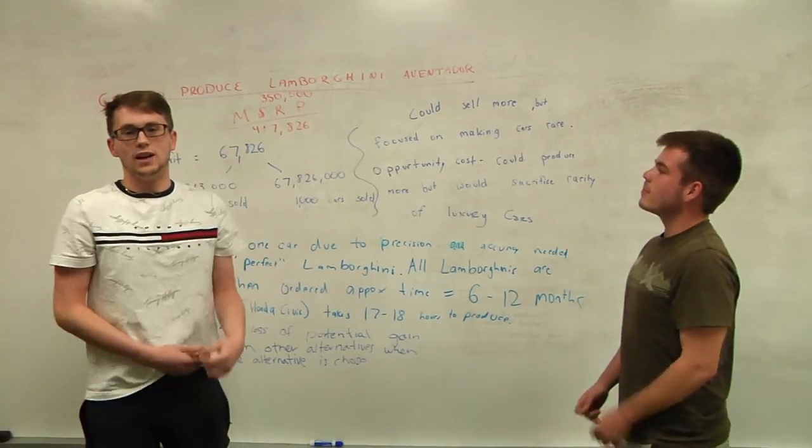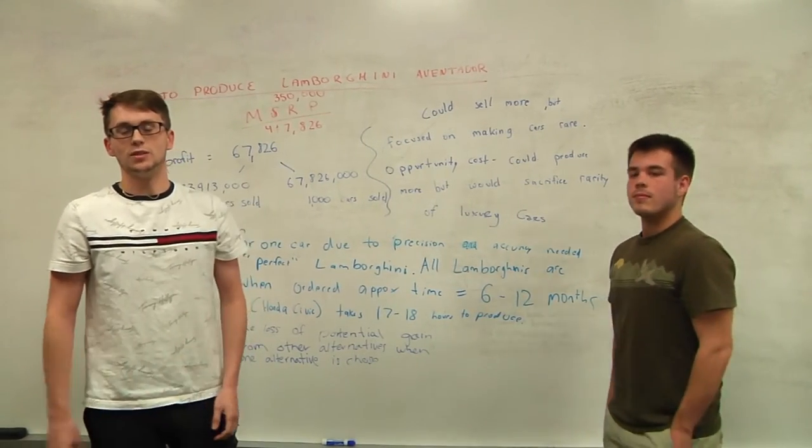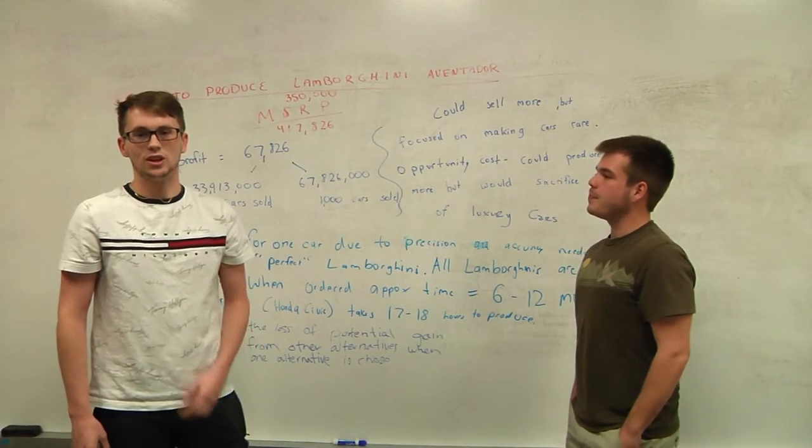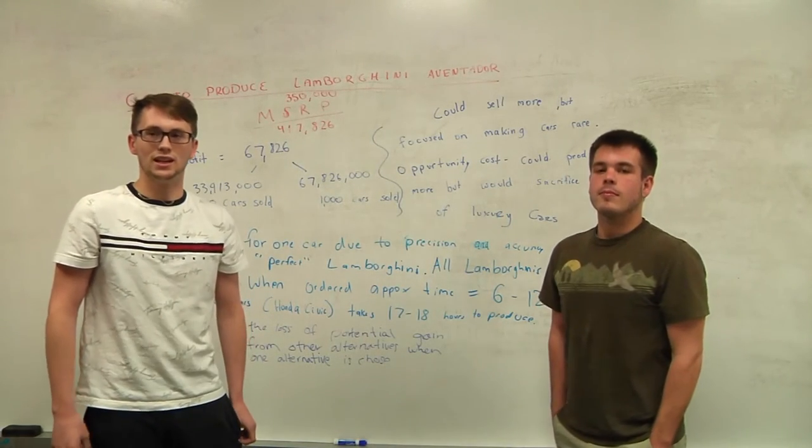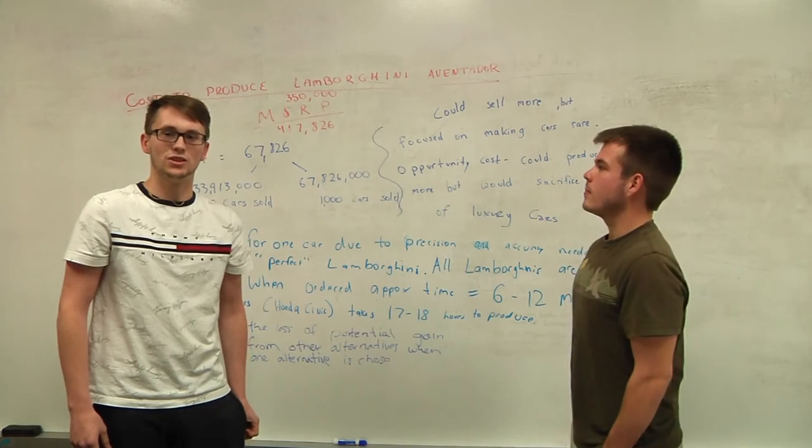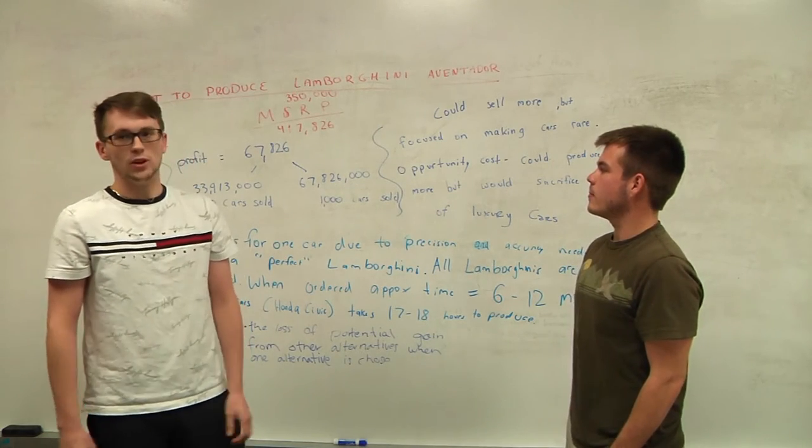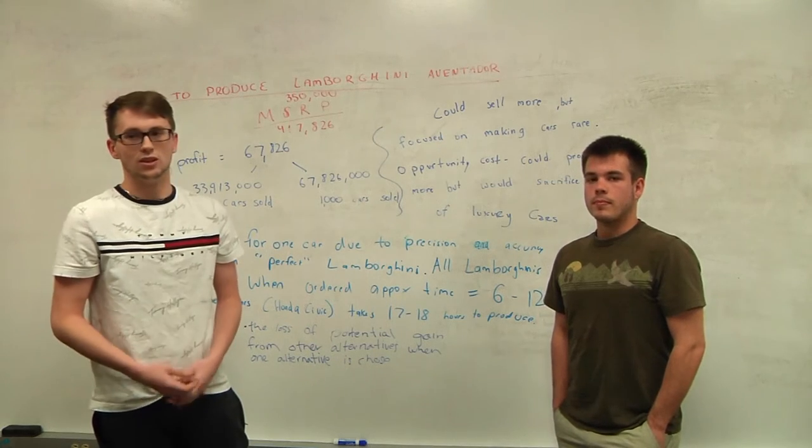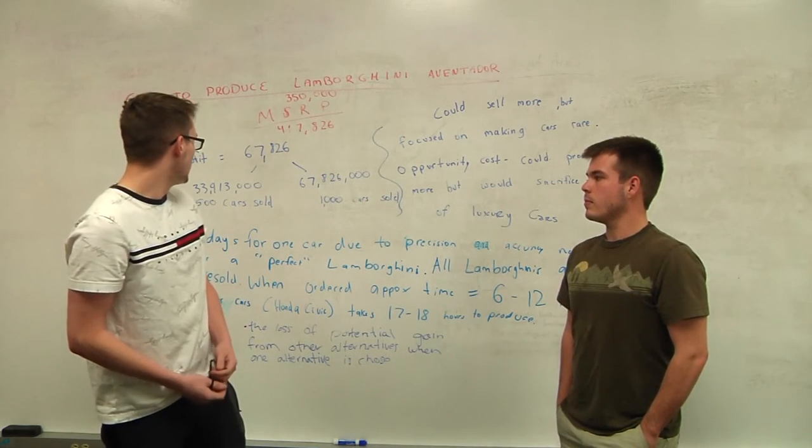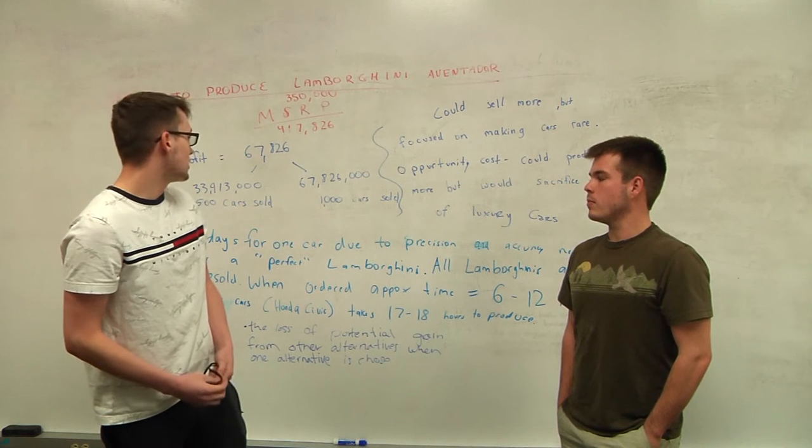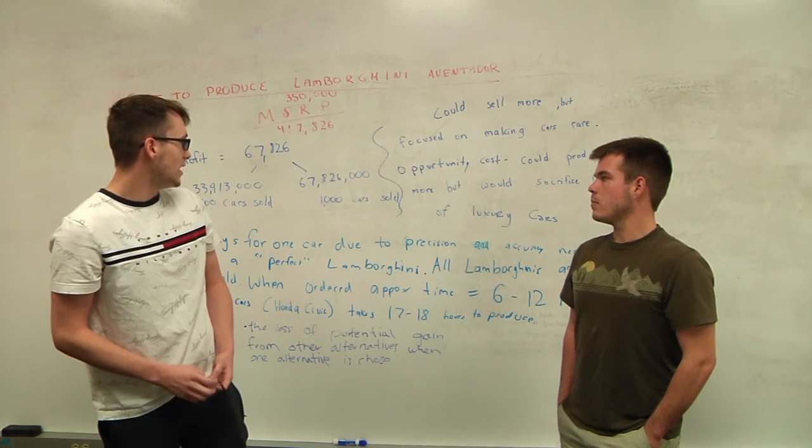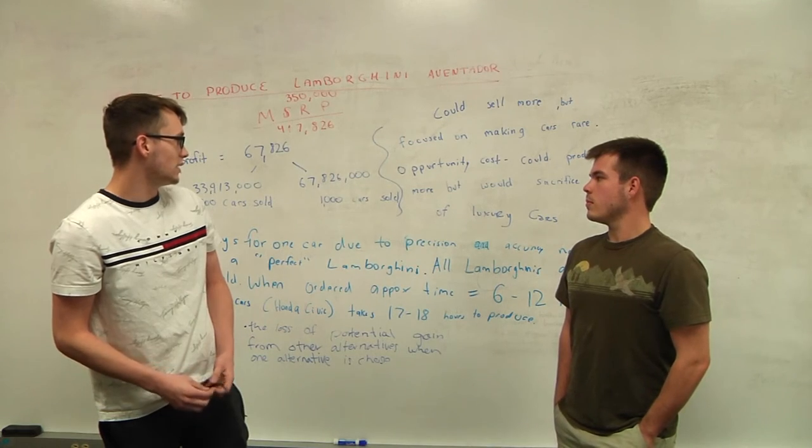All right, now we're going to talk about how much it cost our factory to produce a Lamborghini Aventador. One Lamborghini Aventador costs $350,000 to make and $417,000 at market price. Off of one Lamborghini Aventador, we can expect to make $67,000, and off of $500,000, we can expect to make $33,913,000. And last year we sold 1,000 cars, and we made $67,826,000.